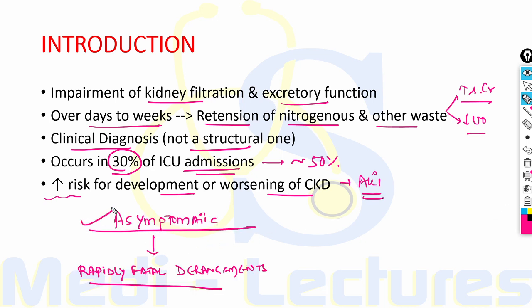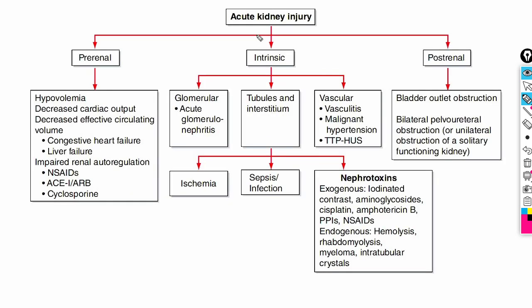AKI can range in severity from asymptomatic and transient changes in lab parameters of GFR to overwhelming and rapidly fatal rearrangements in effective circulating volume regulation, electrolyte composition, and acid-base balance. Acute kidney injury can be divided into three types based on level of involvement: pre-renal, intrinsic renal disease involving the renal parenchyma, and post-renal due to obstruction.